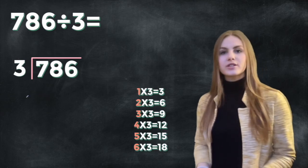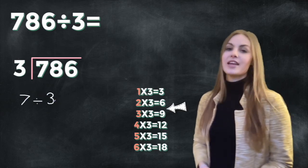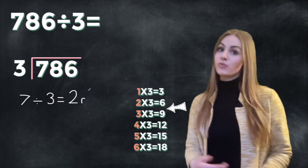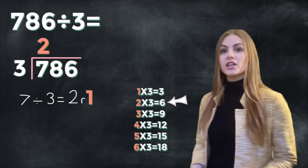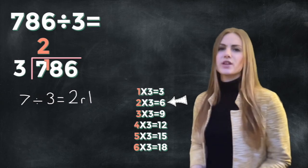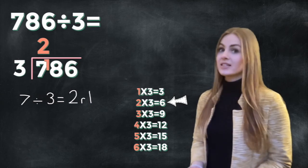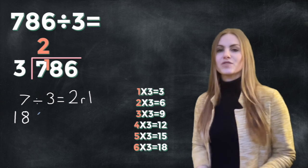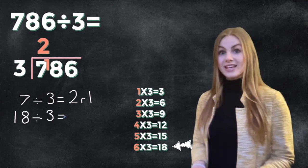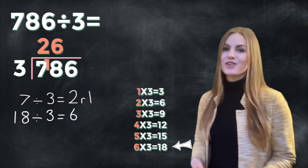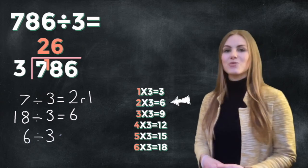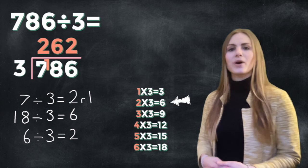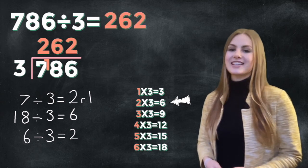So we start with our hundreds. 7 divided by 3 is 2 but we have a remainder of 1. So we put that 2 into our hundreds and then our remainder is exchanged and put into our tens. So instead of 8 tens we now have 18 tens. 18 divided by 3 equals 6. So we can put that 6 into our tens column and then finally 6 divided by 3 equals 2. So our answer is 262.